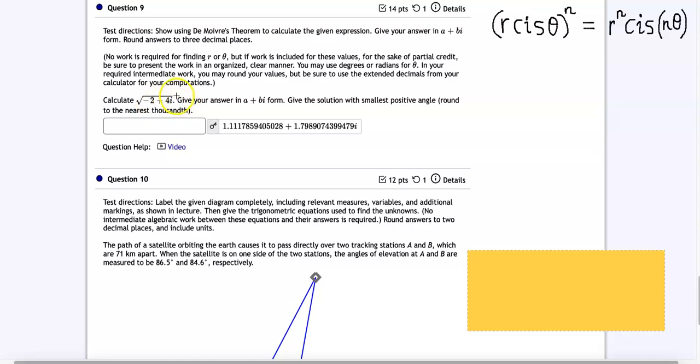So first of all we want to be able to rewrite this as negative 2 plus 4i to the 1 half power. Now what I have up here in the corner, De Moivre's theorem, this is just part of your notes. That's not actually part of your test work. Next we need to rewrite this in trig form. So we still have the 1 half power on the outside except that on the inside we need an R CIS theta.